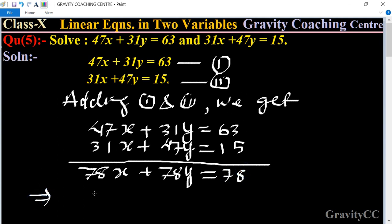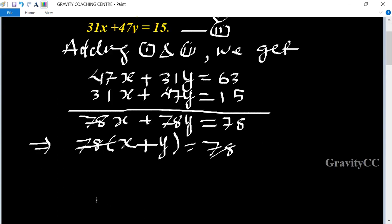x plus y equals 78 divided by 78. 78 cancels, so x plus y equals 1. This equation is the third equation.